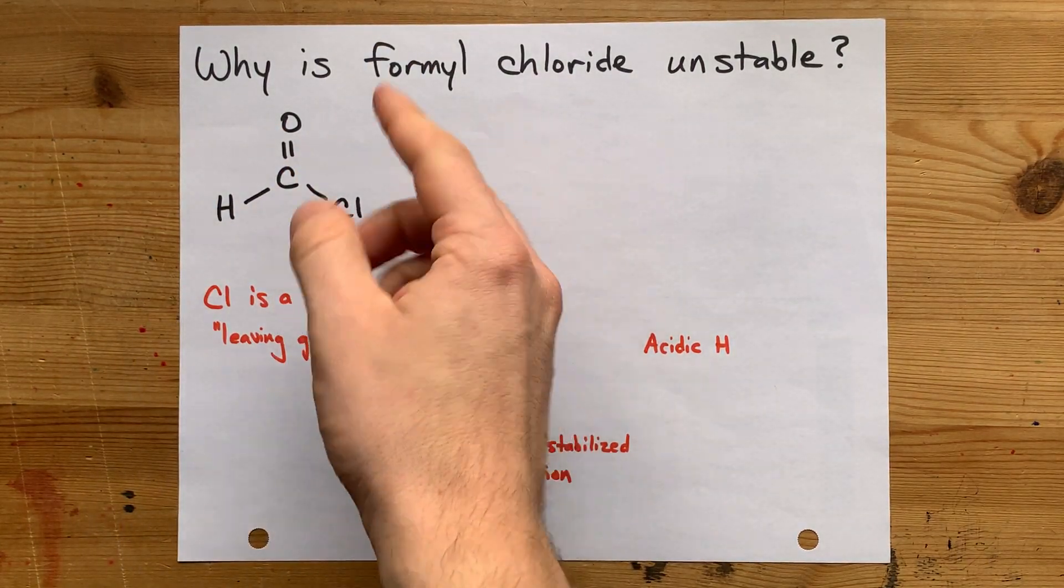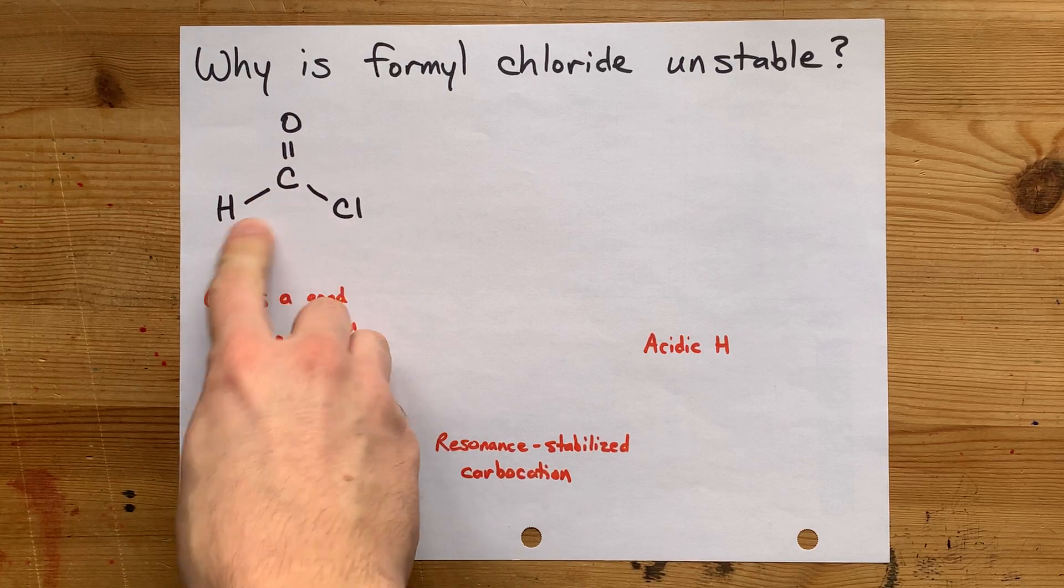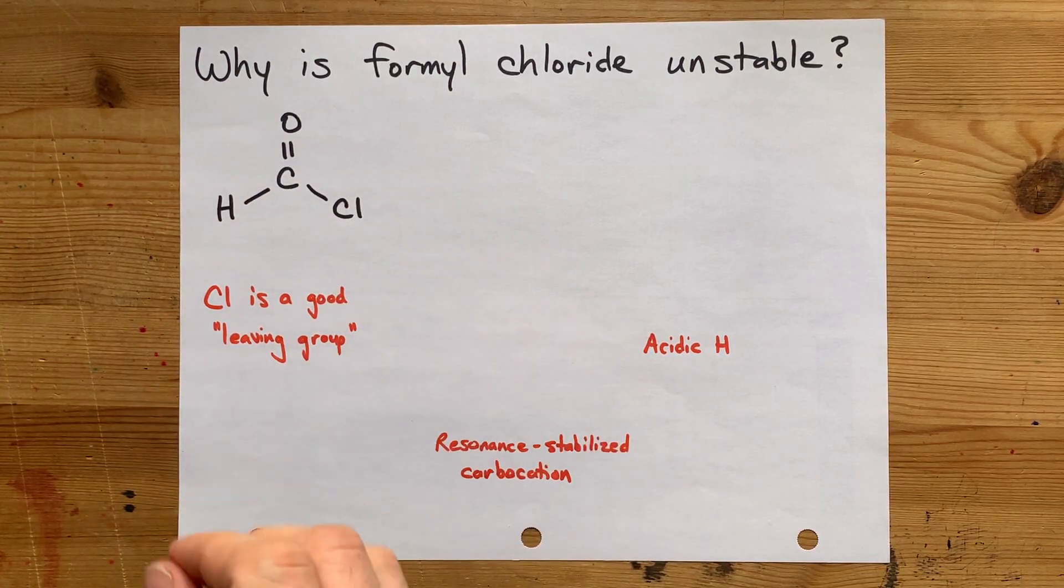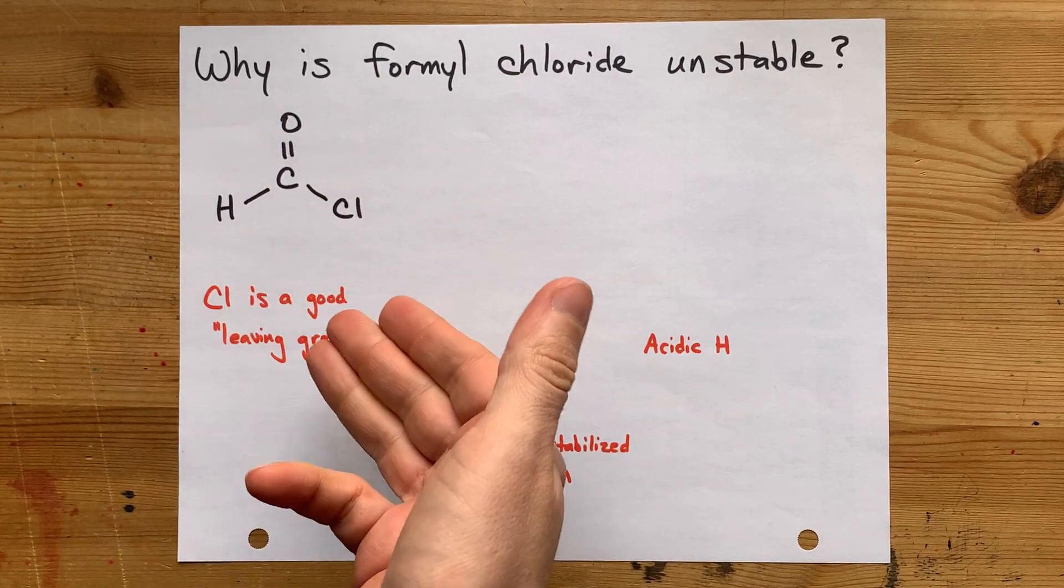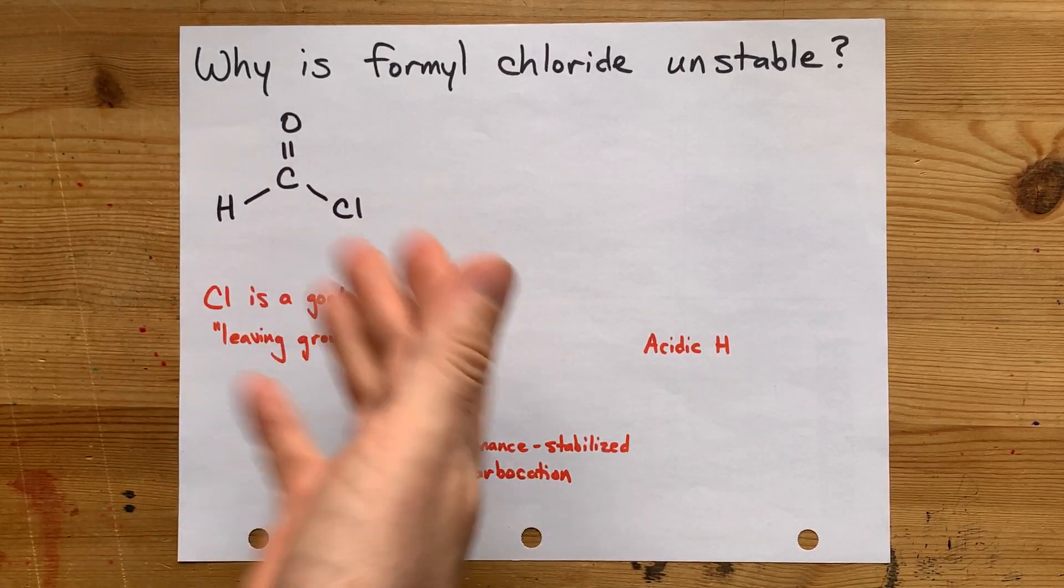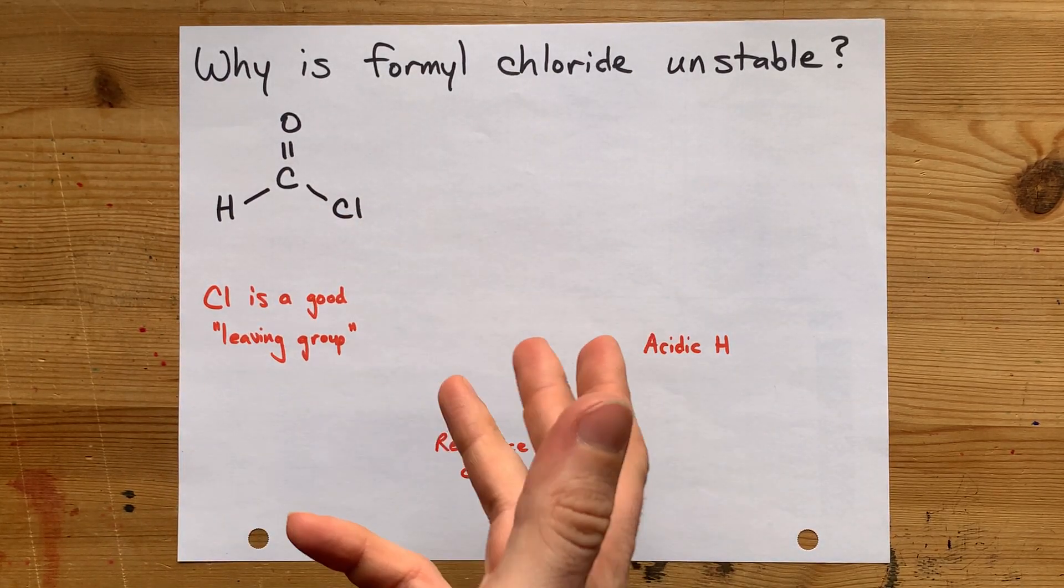Formyl chloride, the acid chloride made from methanoic or formic acid, is unstable whereas all of the other longer chain acid chlorides are not unstable. Why is that?